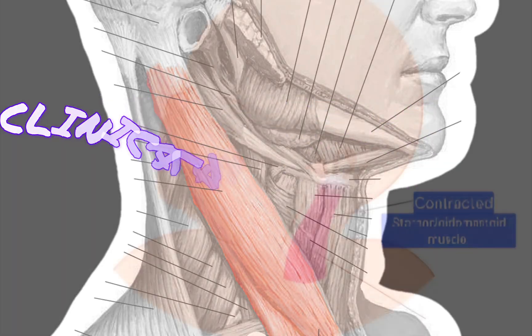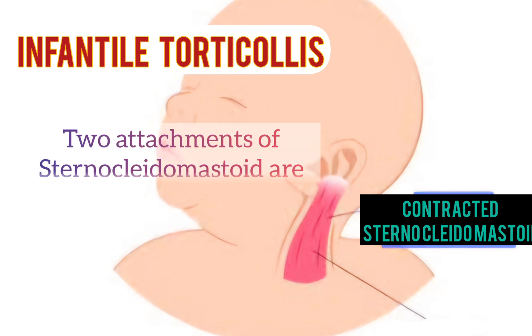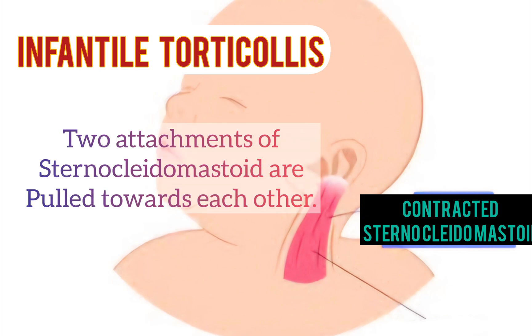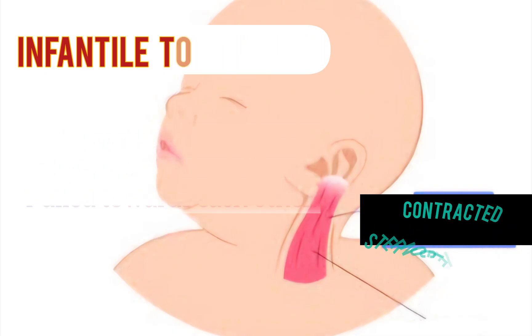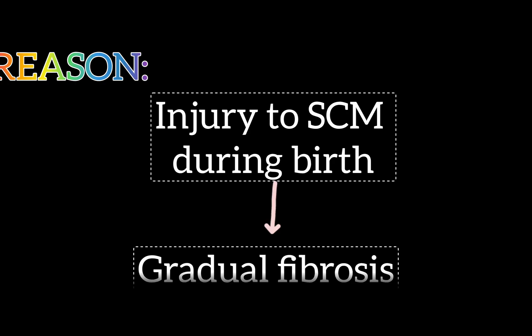Clinical Anatomy: Infantile Torticollis. The two attachments of the sternocleidomastoid are pulled towards each other and the muscle remains contracted. The reason for this is injury to the sternocleidomastoid during birth, which leads to gradual fibrosis of the muscle.